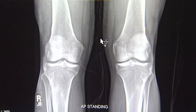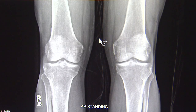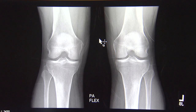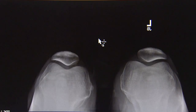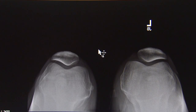This first view is called an AP view, or an anterior to posterior view. The second view is a similar x-ray; however, I have my patients stand and squat about 45 degrees, and it lets us see a different component of their knee joint space. The third x-ray is a lateral, or side view. The final x-ray is what we call a patellofemoral view, where we can see how the kneecaps fit into the end of the femur.